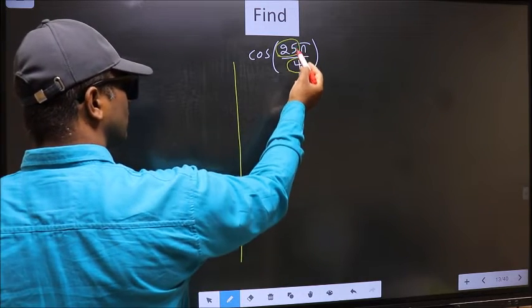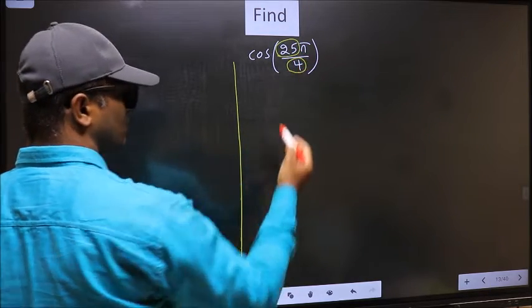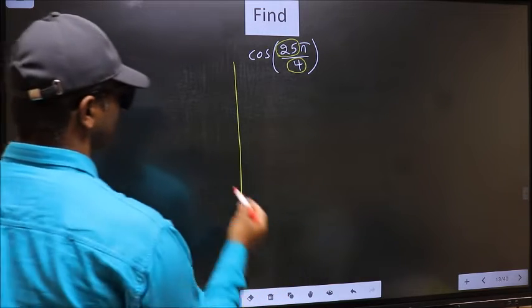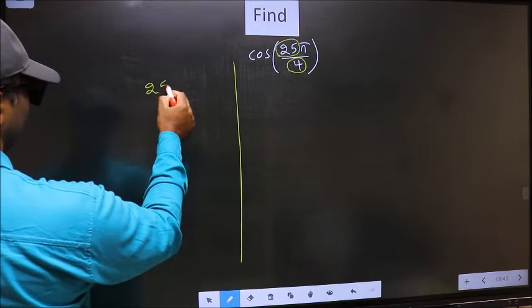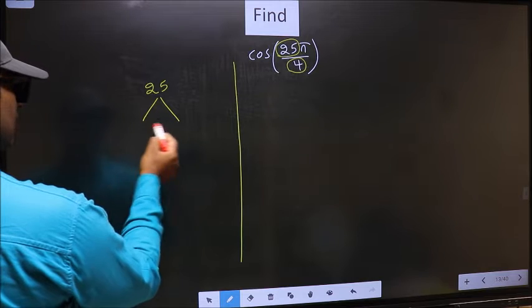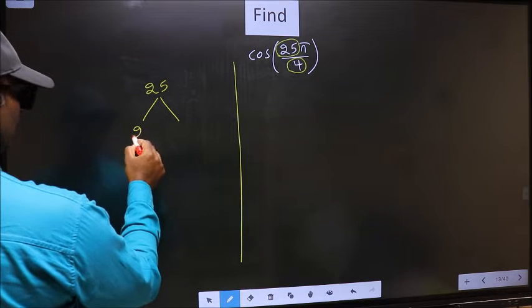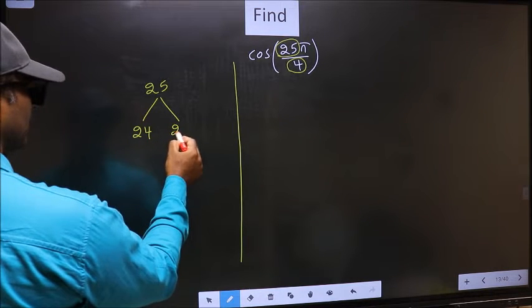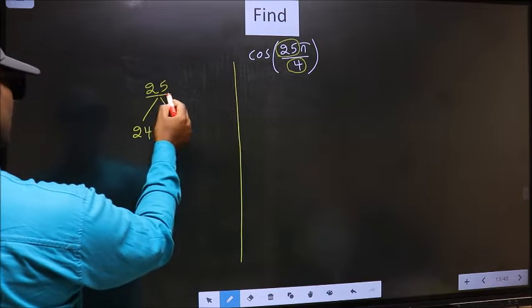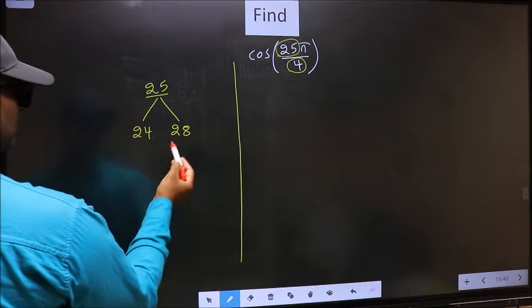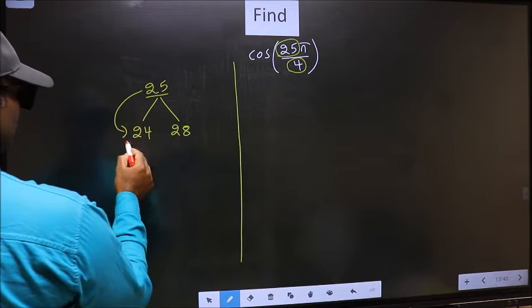25 is close to which multiple of 4. What I mean is 25 and here you write multiples of 4. That is 24 and 28. Now 25 is close to which number? This is close to 24.